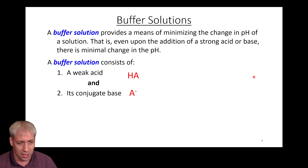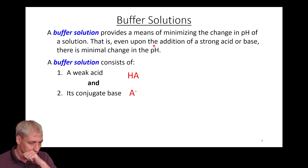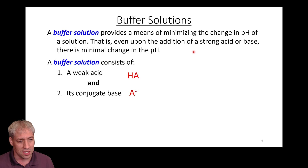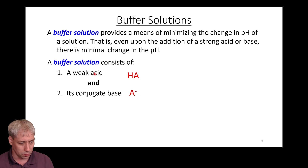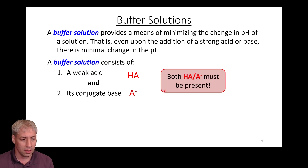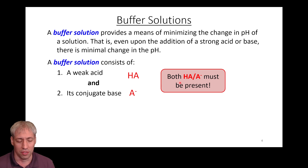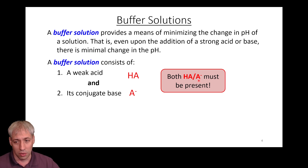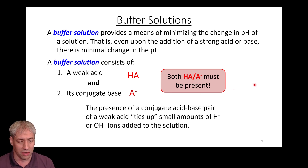A buffer solution provides a means of minimizing the change in pH of a solution — even after the addition of strong acid or base, there's minimal change in pH. A buffer solution is basically a weak acid (HA) and its conjugate base (A⁻) put together in solution. You need both HA and A⁻ to be present in order to resist changes in pH.